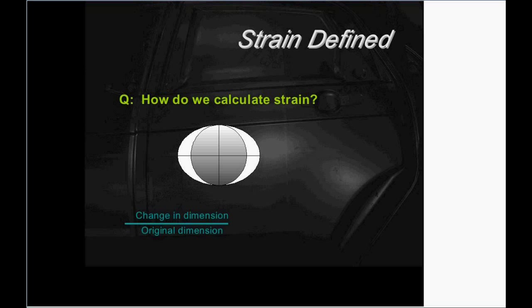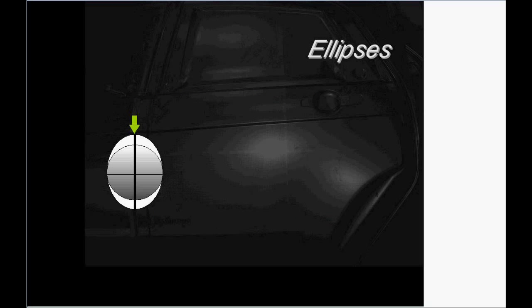So, to remind you of how we calculate that strain, we would take that change in the dimension divided by the original dimension, and by change in dimension, we mean the final minus the original length or diameter, then we just multiply it by 100. And then we can say, well, we've got 5% strain, we've got 10% strain, or what have you.